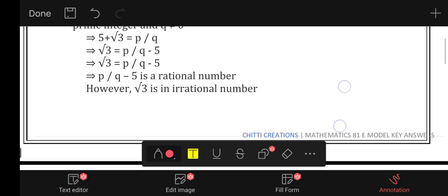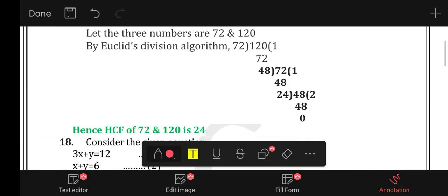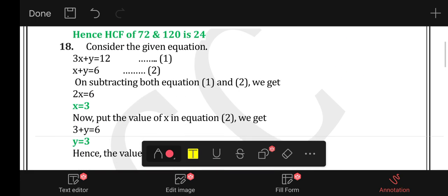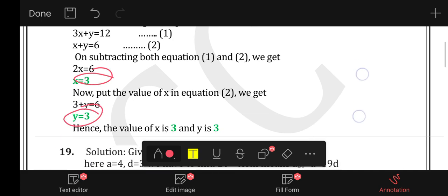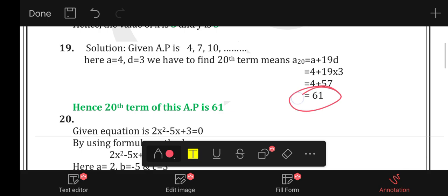To prove root 5 is irrational, we divide and use the elimination method. x is equal to 3, y is equal to 3, so the answer is 61.